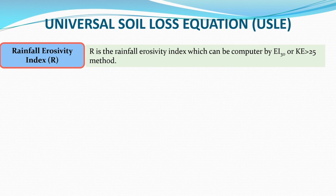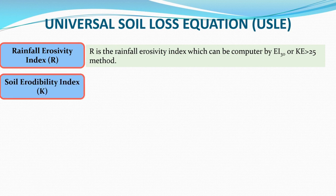The other method is Kinetic Energy greater than 25: if the rainfall intensity is more than 25 millimeters per hour, we consider that rainfall. The next factor is the Soil Erodibility Index K.